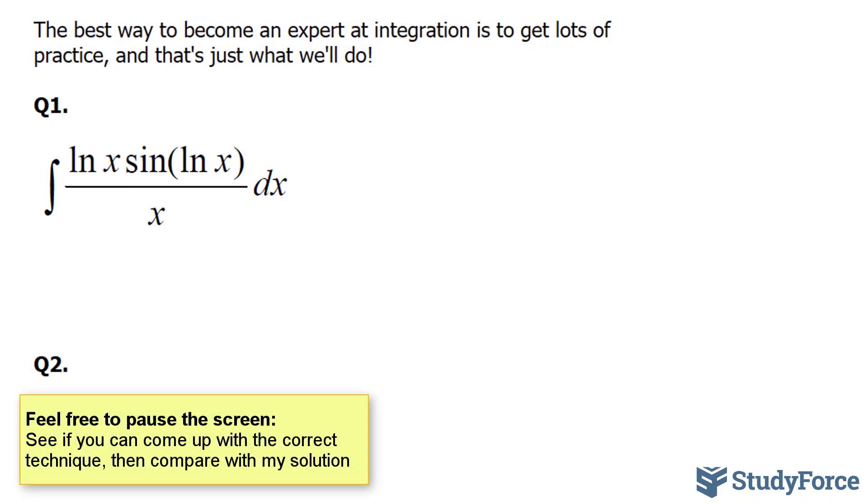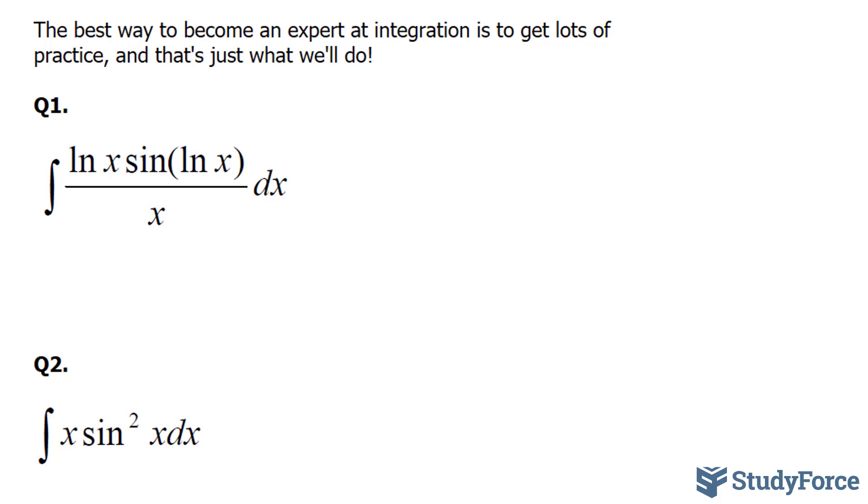For this problem, you want to start with the easiest of the methods, which is the substitution method, and you can use the letter of your choice. Typically we use u, but I'll use w for this case because this particular function requires two separate techniques. So I'm going to set ln x equal to w, and I'll find the derivative of this function. Finding the derivative gives us dw is equal to 1 over x dx. We've replaced this with w and this with w. Solving for dx gives us dw times x is equal to dx.